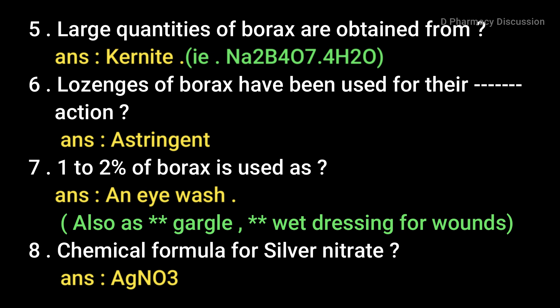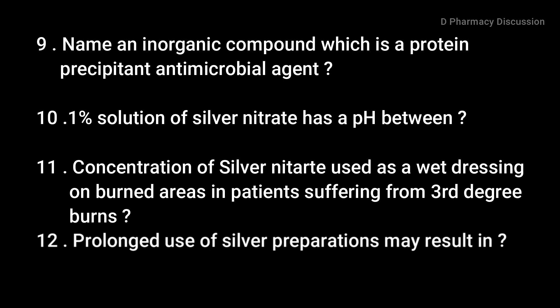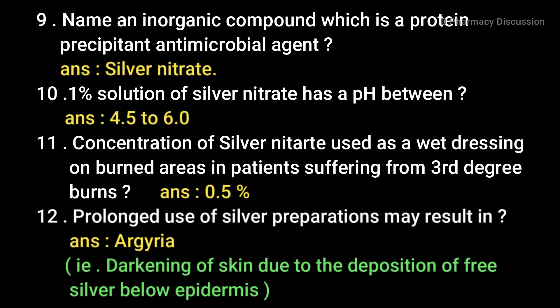1 to 2% borax is used as an eye wash; it is also used as a gargle and wet dressing for wounds. Chemical formula for silver nitrate — answer: AgNO3. Next question: name an inorganic compound which is a protein precipitant antimicrobial agent — answer: silver nitrate.